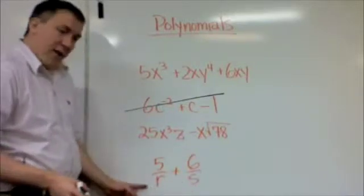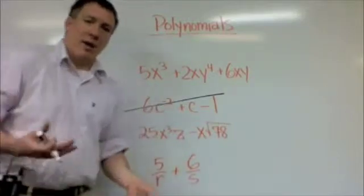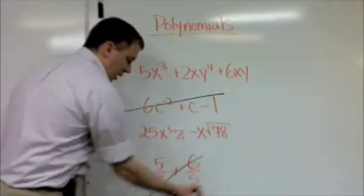And then this one here, I'm dividing by r, I'm dividing by s. You can't divide by the variable. That would be like having a negative exponent. So this one's gone as well.